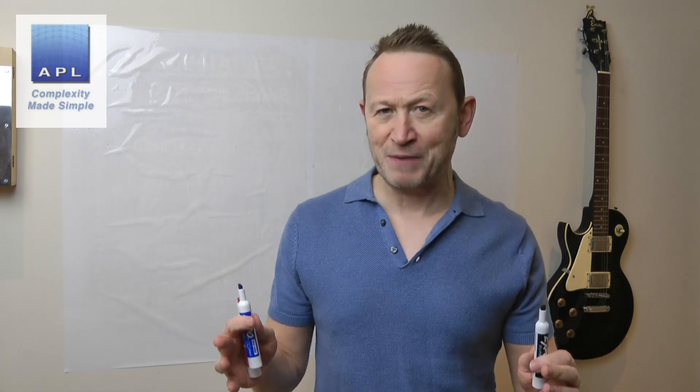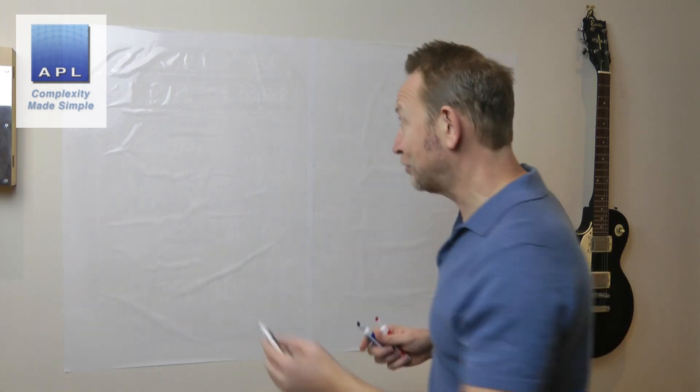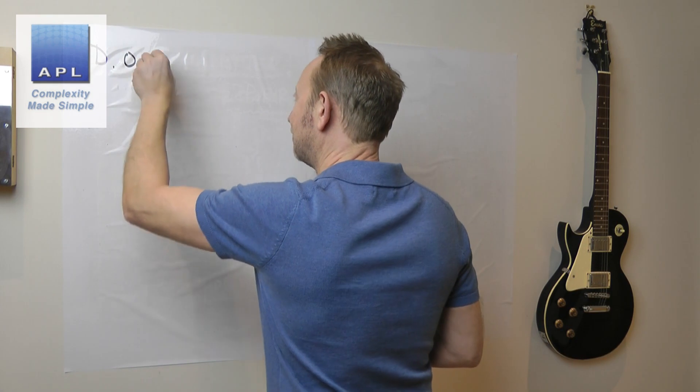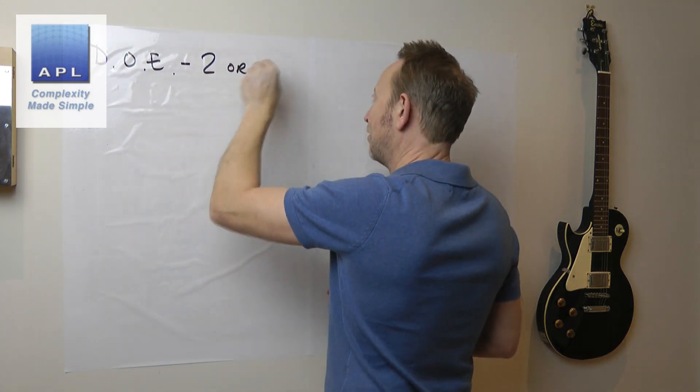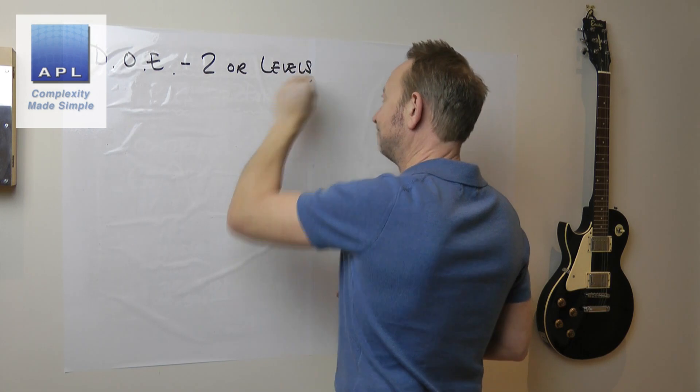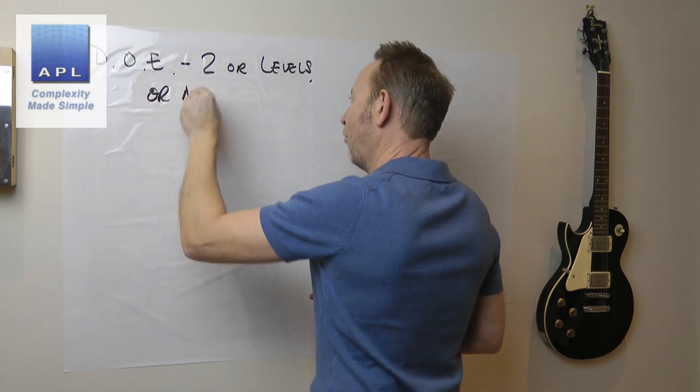Welcome to Complexity Made Simple. My name is Paul Allen and the subject of today's video newsletter, we're going to take a look at design of experiments and how many levels, how many data points do you really need to test to find out how your system works. So we're going back to DOE and the question is, is it two or three levels or more?